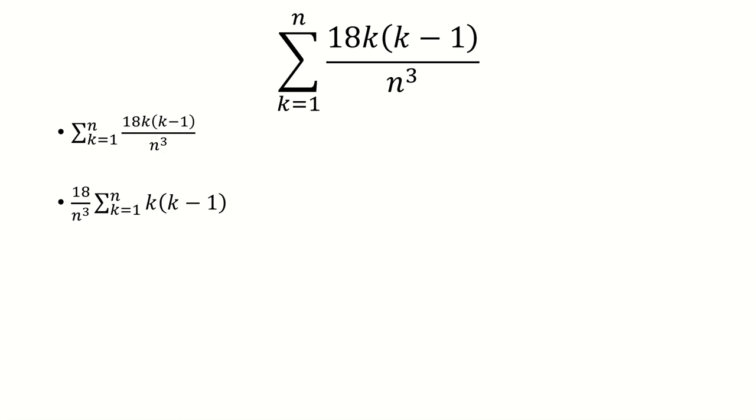And then we're going to distribute the k to k minus 1, you have k squared minus k. And now we can separate this into two different sums.